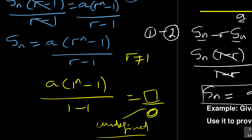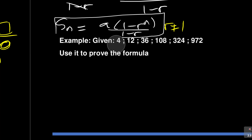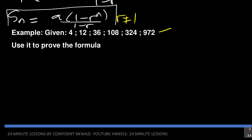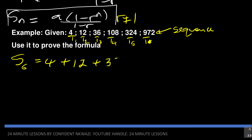Just to show you the appreciation of this formula, let's look at an example to understand the derivation. We are given a sequence: 4, 12, 36, 108, 324, 972. If I write it as a series, S6, I add all six terms: 4 + 12 + 36 + 108 + 324 + 972. So there are six terms — t1 through t6 — and t6 = 972. This is the geometric series.